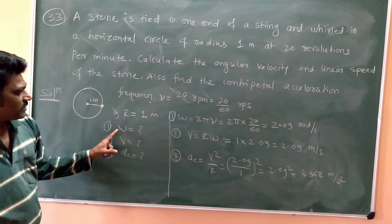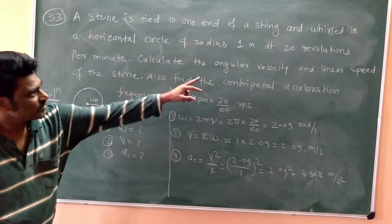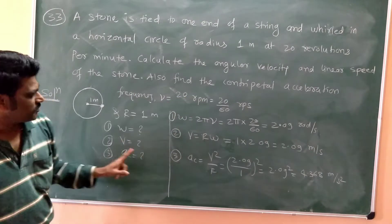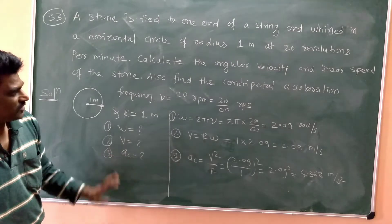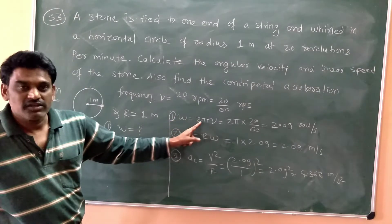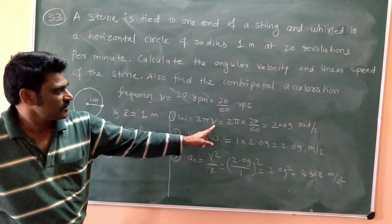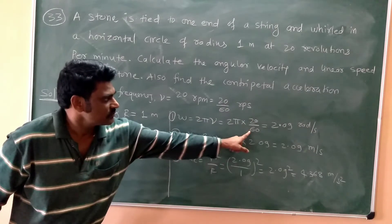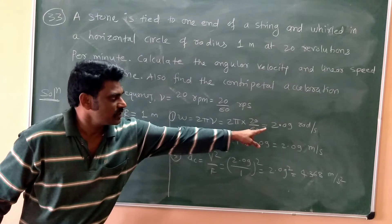So what do we have to calculate: angular velocity, then linear speed and centripetal acceleration. To calculate first, angular velocity is 2π into frequency, so 2π into frequency. Calculate this, you will get 2.09.